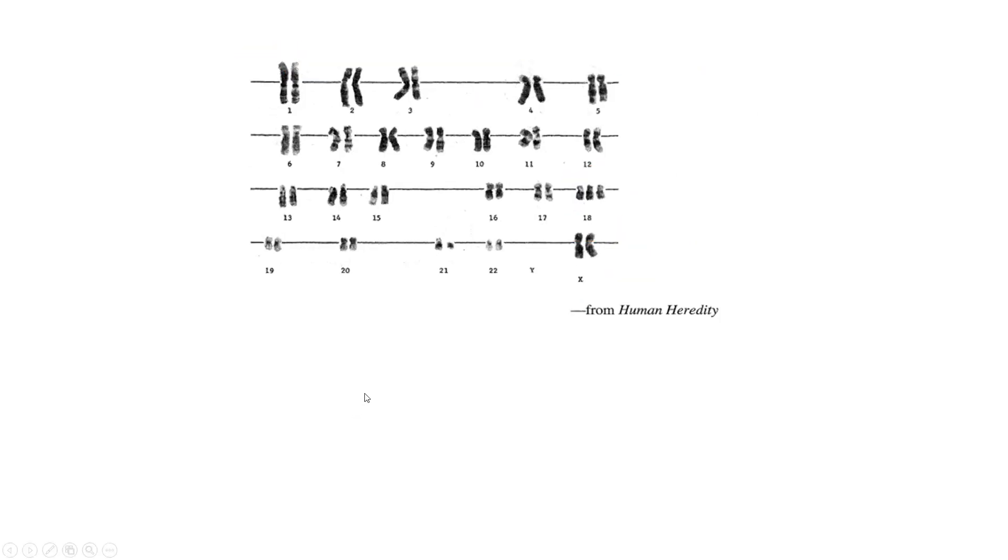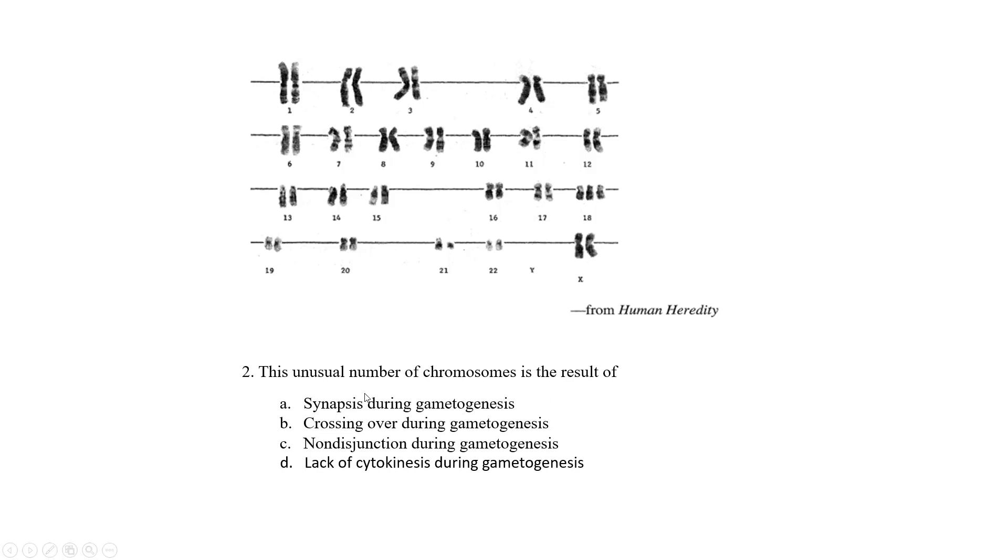When that occurred, that's question number two. This unusual number of chromosomes is the result of synapse during gametogenesis. Gametogenesis is just the general term for producing gametes. We have spermatogenesis and oogenesis that are more specific. During synapse, nope. During crossover, no. Crossover contributes to genetic diversity. It does not contribute to an abnormal number of chromosomes.